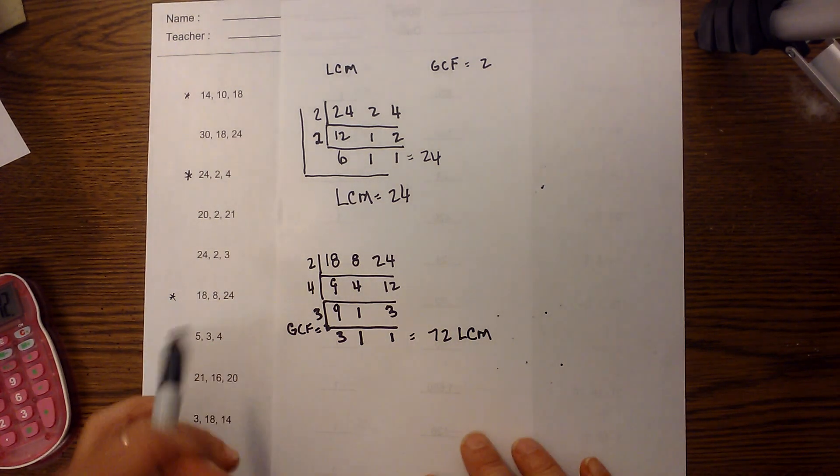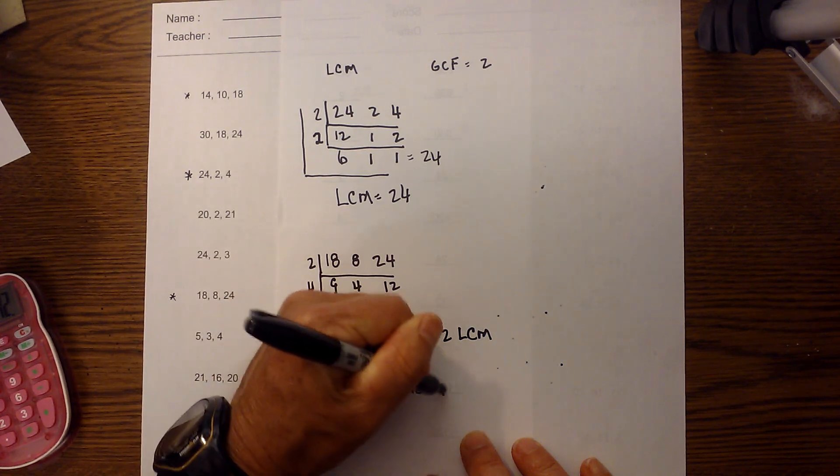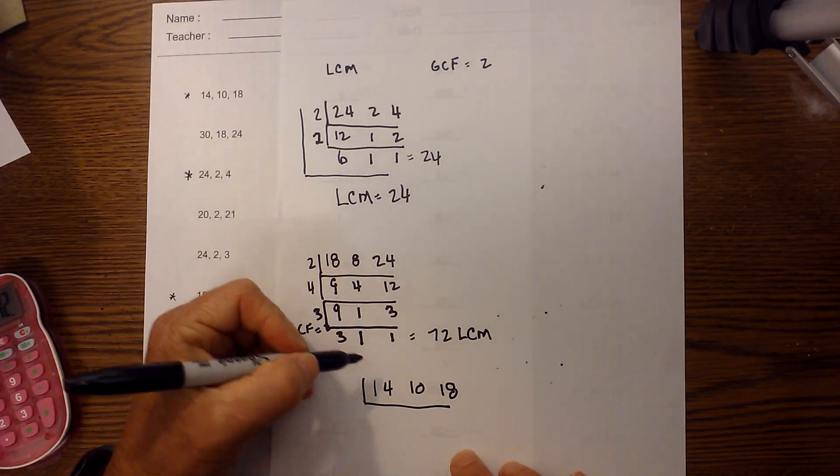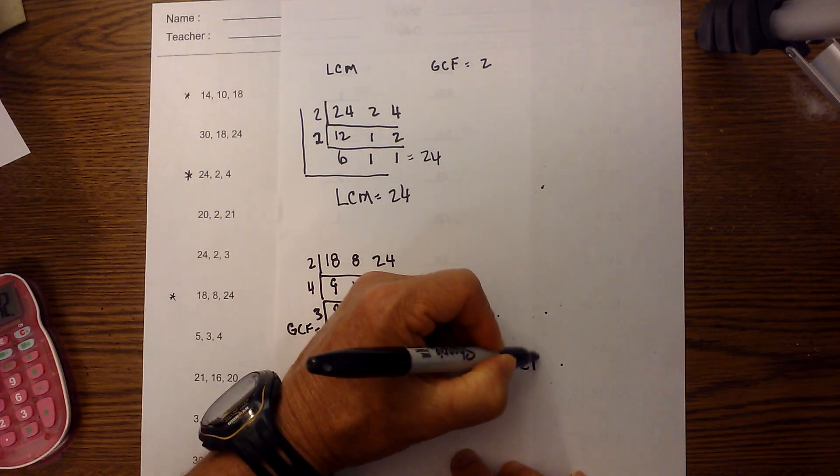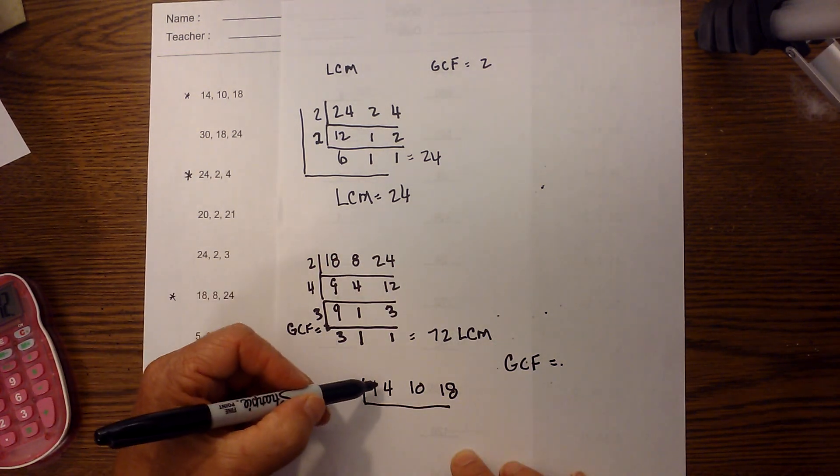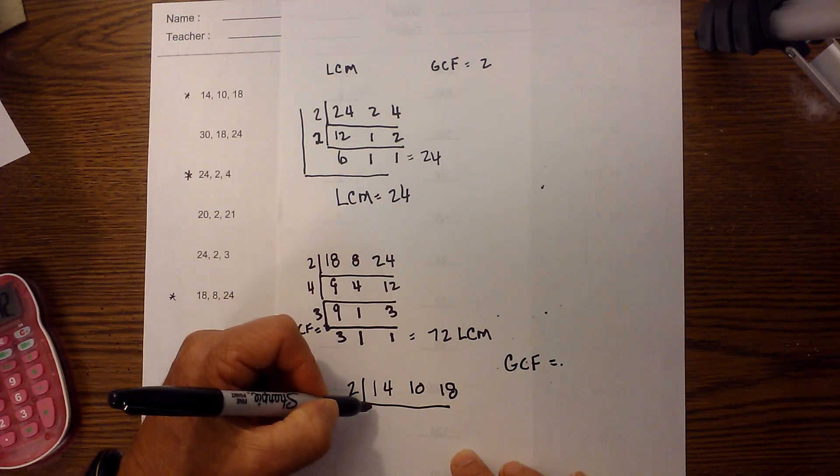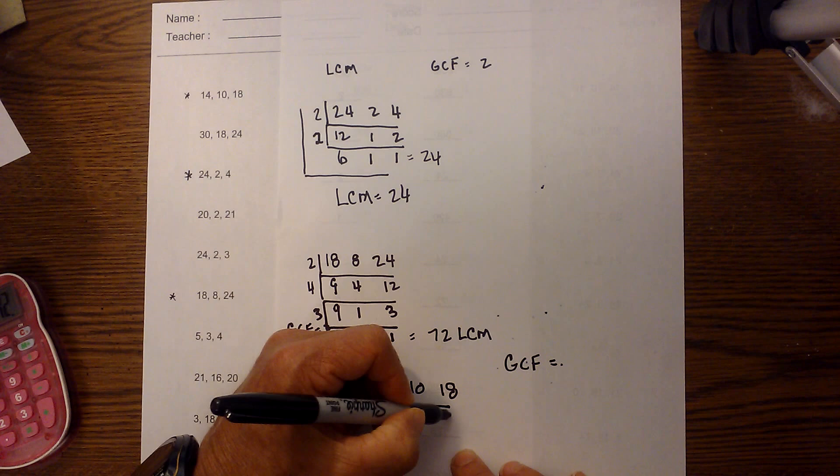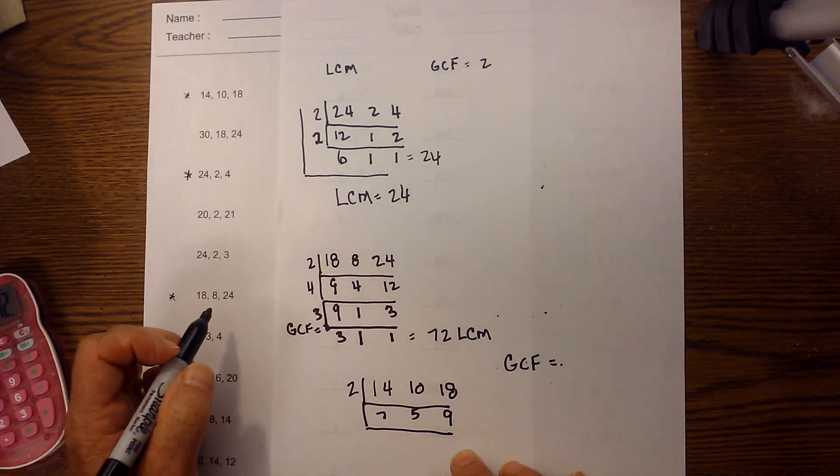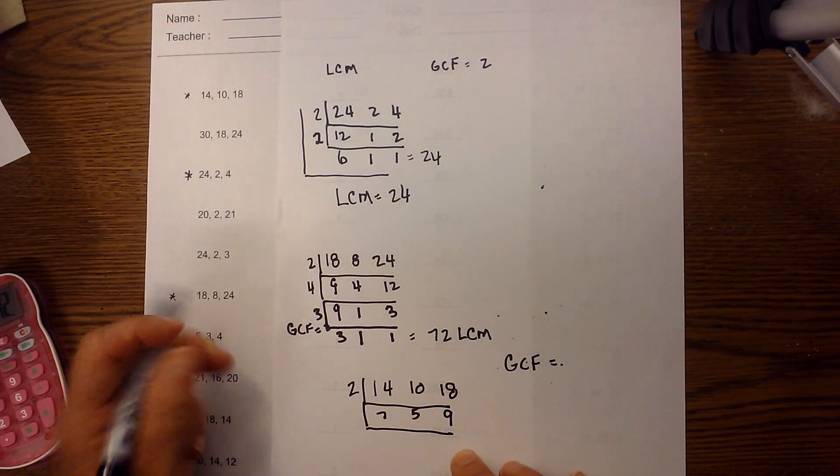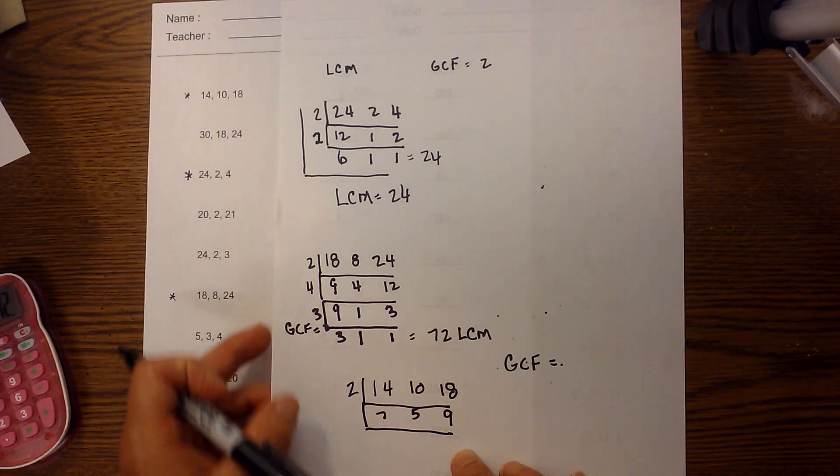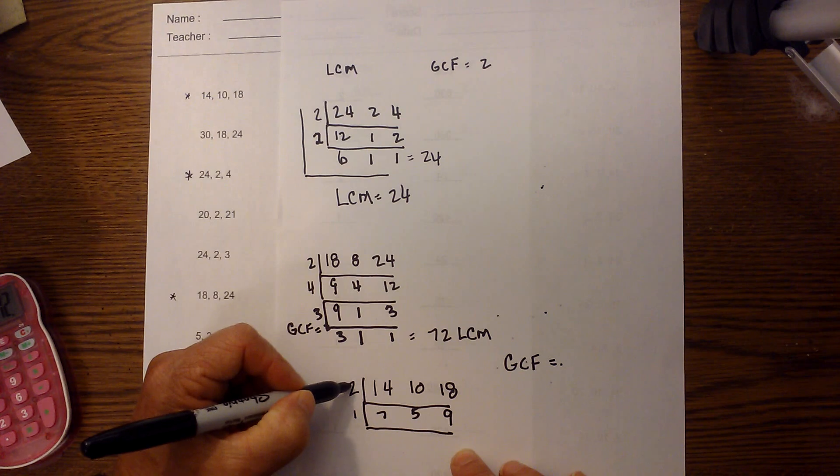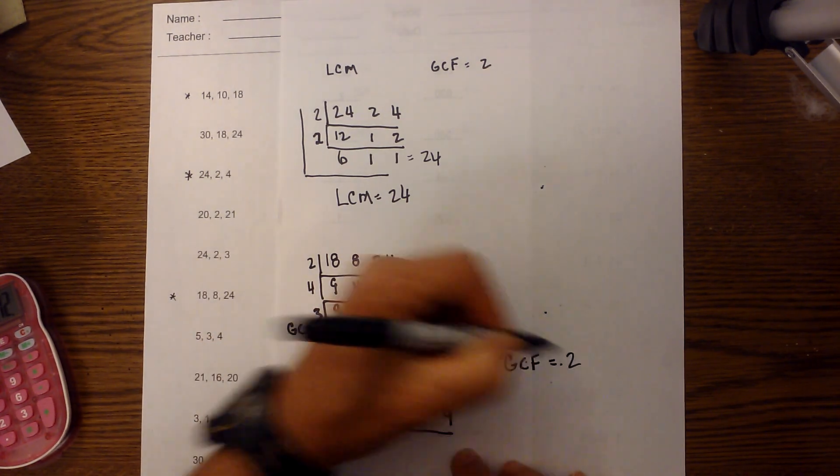Finally, let me work one other example: 14, 10, and 18. Let's find the GCF. I'm going to write it over here so I don't make a mess like I did last time. I know 2 goes into 14 seven times, 2 goes into 10 five times, and 2 goes into 18 nine times. At this point the only number that will go into it again is 1, so 2 times 1 is 2. The GCF is 2.